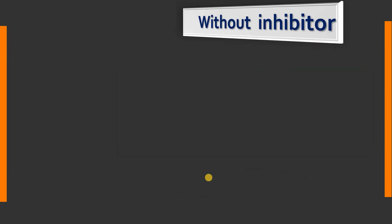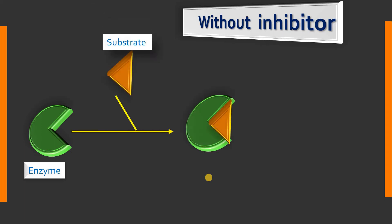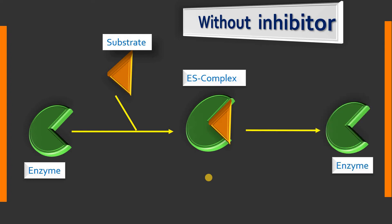We will see the normal enzyme-catalyzed reaction without inhibitor. As usual, enzyme combines with a substrate to form an enzyme-substrate complex, and later it will give the enzyme back unchanged and the product.